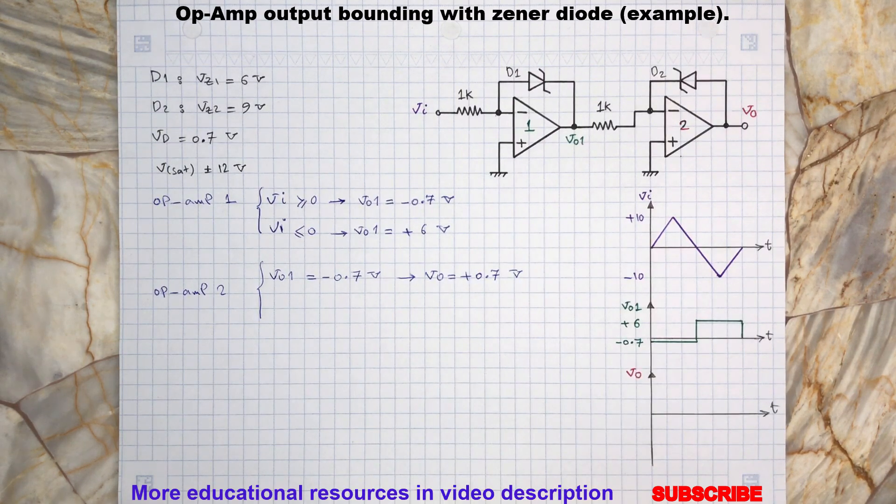Now let's continue with the next cycle when the input signal to the second op-amp becomes positive 6 volts. This will push the op-amp output to swing to its negative saturation point, which is minus 12 volts.